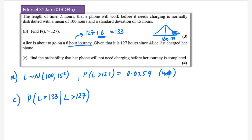Think about whether this probability is going to be more or less than if we hadn't been given that condition — just asking what's the probability it lasts 133 hours without any given-that. Intuitively this conditional probability should be bigger, because this phone has already lasted such a long time. It only needs to last six hours extra, whereas without the condition there's a lower chance of reaching 133.